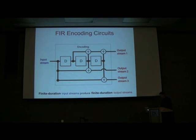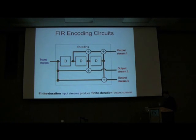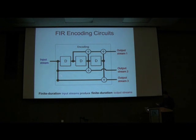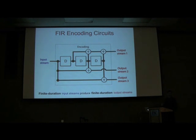A classical convolutional code is a circuit that takes an input stream of data to an output stream — usually one set of inputs to several sets of outputs. This particular circuit is a finite impulse response circuit. What this means is, if your input stream is of finite duration, then what comes out will also be of finite duration. These little dots are copying elements, and these D gates are delay gates. What you do is a linear time-invariant filter of your input stream to generate the output stream. Having only finite impulse response circuits limits your power in the classical domain.